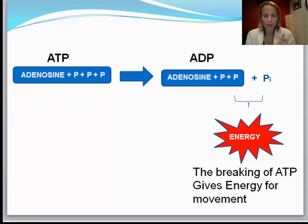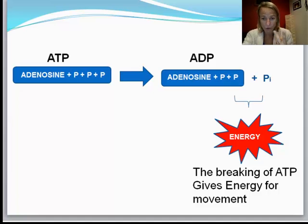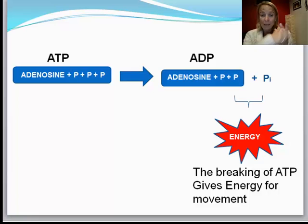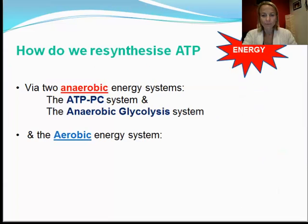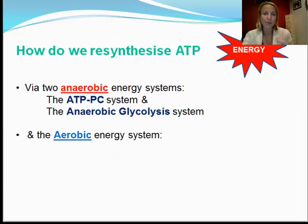How do we produce energy? ATP is adenosine triphosphate — three phosphates. When it is broken into ADP, adenosine diphosphate, and the inorganic phosphate left over, that is when we get the release of energy. Because we only have a couple of seconds of ATP stored in our muscle, we need to produce more. We do this via three energy systems.